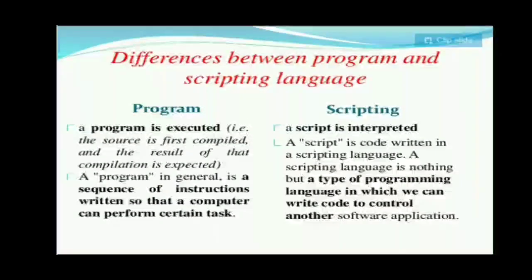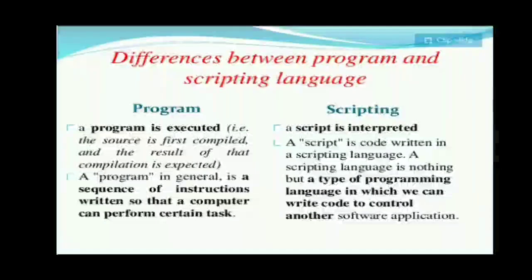The difference between a programming language and a scripting language: a program is first compiled, and the result of that compilation is executed. A program is in general a sequence of instructions written so that a computer can perform certain tasks — a collection of commands or instructions. While scripting is interpreted. A scripting language is a type of programming language in which we write code to control another software application.